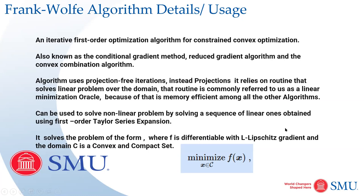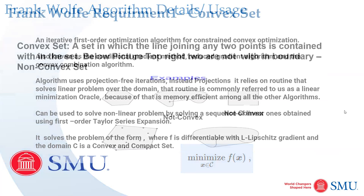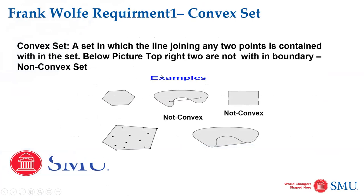I'm going to explain what those three things mean. The first one is a convex set. A convex set is a set in which the line joining any two points — those points must be within the set. As you can see here, these three are within the set; these two are not. So this shape is not convex. This is the first constraint requirement.